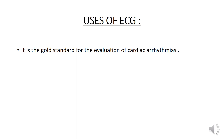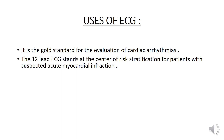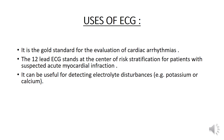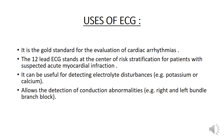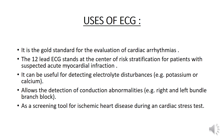So far we have discussed about the characteristics of ECG waveform. Let us now discuss about the uses of ECG. It is the gold standard for the evaluation of cardiac arrhythmias. The 12-lead ECG stands at the center of risk stratification for patients with suspected acute myocardial infarction. It can be useful for detecting electrolyte disturbances such as potassium or calcium. It allows the detection of conduction abnormalities, that is right and left bundle branch block. As a screening tool for ischemic heart disease during a cardiac stress test.